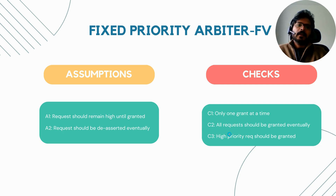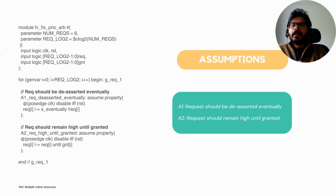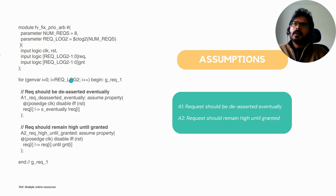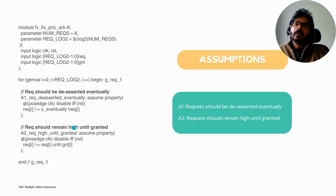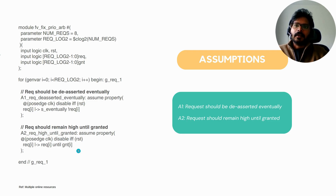You can also add a simple check saying there should not be any grant when there is no request. Looking at the assumptions in detail: A1 — request should be de-asserted eventually. It's on positive edge clock, and if you have reset you don't care about it. For each i, iterating from zero to the total number of requests, if requester i is asserted it should eventually get de-asserted. A2 — request should remain high until it is granted. The same generate loop iterates from zero to total number of requests, and request i should stay high until it is granted.